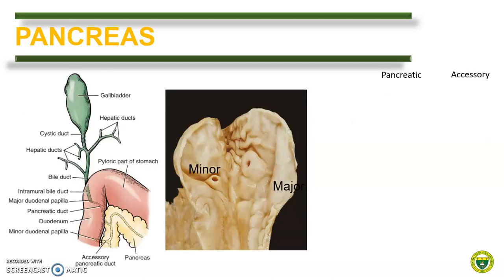We can also compare the pancreas based on the presence or absence of a specific pancreatic duct. As a review, the pancreas conveys its secretion to the duodenum via two ducts: the pancreatic duct or the duct of Wirsung, and the accessory pancreatic duct or the duct of Santorini. The pancreatic duct is more cranial, usually the smaller duct, and opens into the major duodenal papilla in common with the bile duct from the liver. On the other hand, the accessory pancreatic duct, despite its name, is the main conduit of the gland and is constant. It is larger and opens on the minor duodenal papilla.